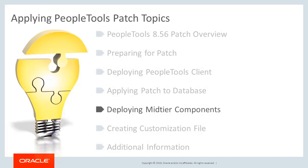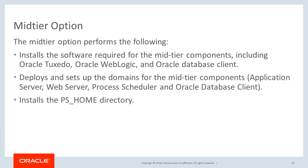Once the patch has been applied to the database, you will deploy the mid-tier components for the new release. You will need to use a customization file to identify the location of existing components that you want to retain, as well as identifying the PS AppHome directory. The mid-tier option installs software required for the middle-tier components including Oracle Tuxedo, Oracle WebLogic, and Oracle Database Client. It deploys and sets up domains for the Application Server, Web Server, Process Scheduler, and Oracle Database Client, and also installs the new PS home directory.